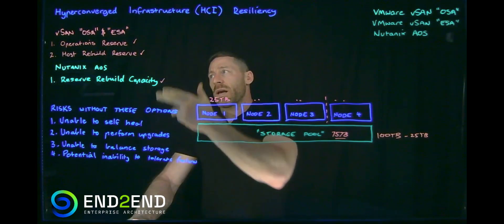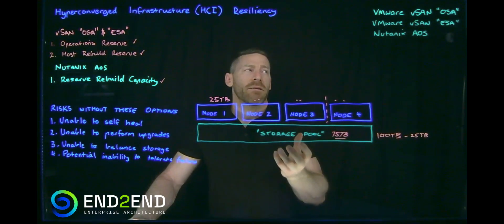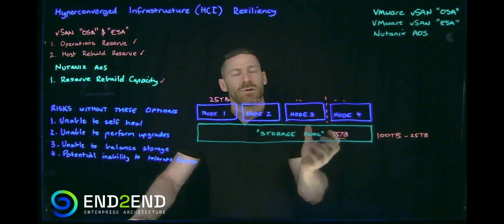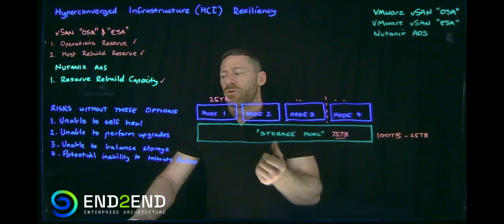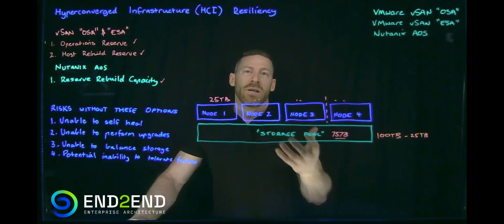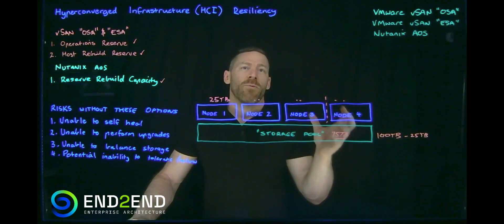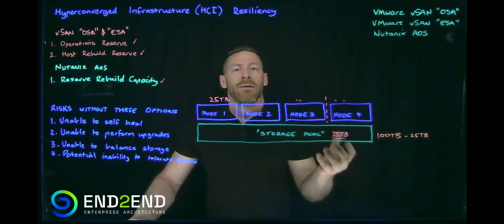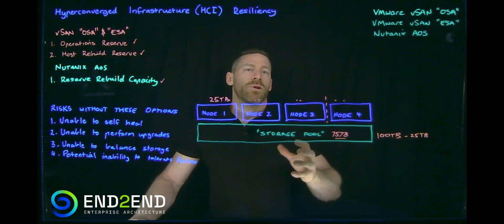Another one, such as without operations reserve, vSAN might not be able to balance the storage correctly. The same is true for AOS, it might not be able to balance the storage efficiently as well. So in those scenarios, you can lead to performance degradation and again risk of issues down the track. And the last one is potential inability to even tolerate failures at all. If you're too full and you've performed maintenance, you might not even have second copies of some of your data in order to be able to tolerate a simple disk failure. So without these settings enabled, you put yourself at risk of all these different scenarios, which are really undesirable.